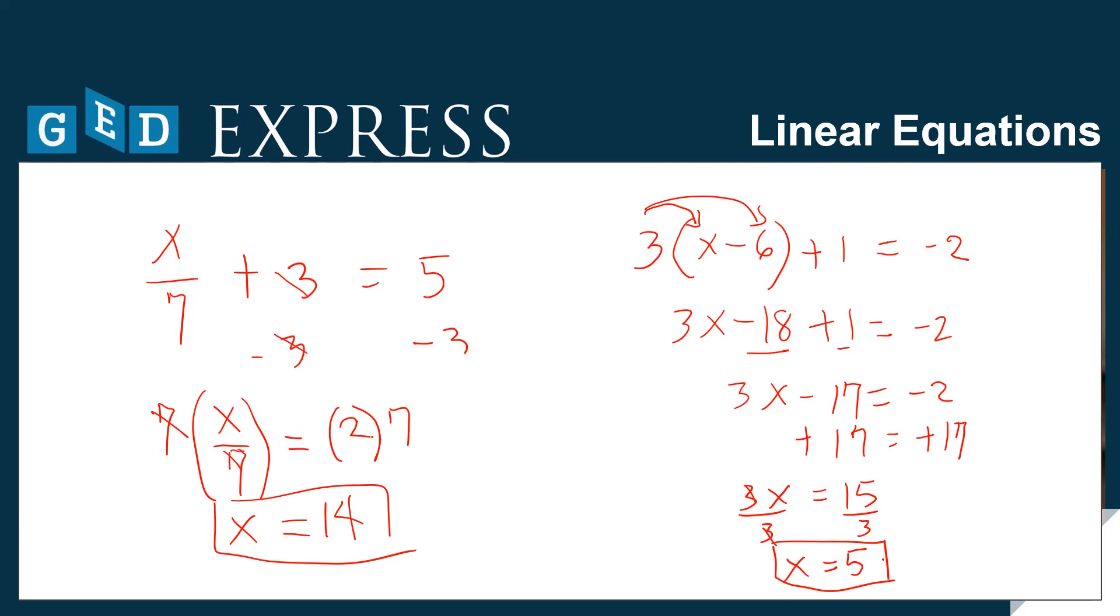Okay, if we are just following the process in undoing the operation involved, it's easy. And we will surely find the value of the variable that will make the statement true. Let's try more of this kind of equation, multi-step equations.